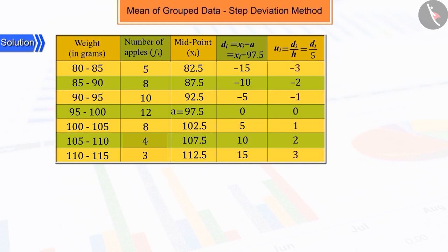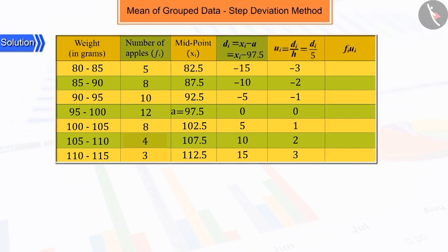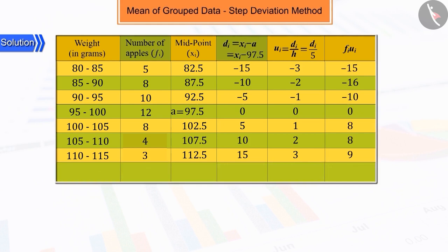To find the mean, multiply each UI by FI and find the sum of their products and the sum of the frequencies FI.